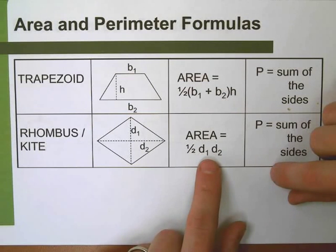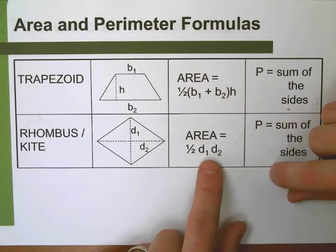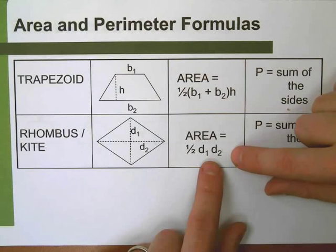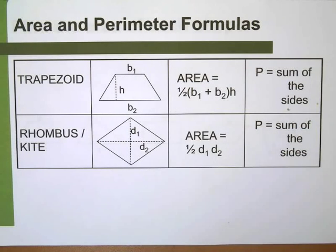And down here, notice this is the only one. This is the one that throws everybody off. Because it's not plus. It's not D1 plus D2 like the trapezoid. Notice this one's a sum. This one is just straight multiplication. I'll explain why in that other series of videos. But pause for now. Record these. When you're ready, unpause.